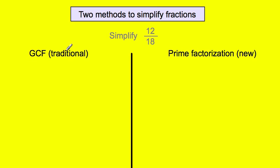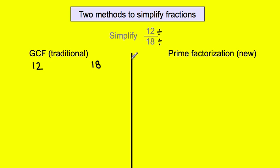Let's take on simplifying 12 over 18 using the greatest common factor method. Both of them require prime factorization, so let's factorize the numerator, which is 12, and the denominator, which is 18. Our goal is to find the greatest common factor and then divide the 12 by something and the 18 by exactly the same number. If we divide both by the same number, we're going to get a smaller number that is equivalent to 12 over 18.